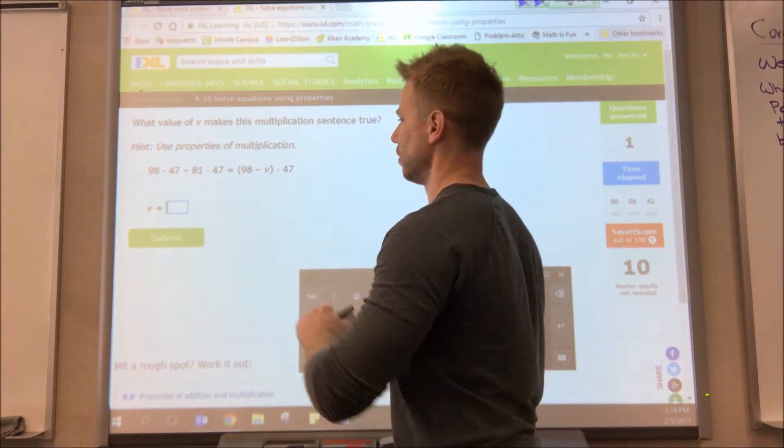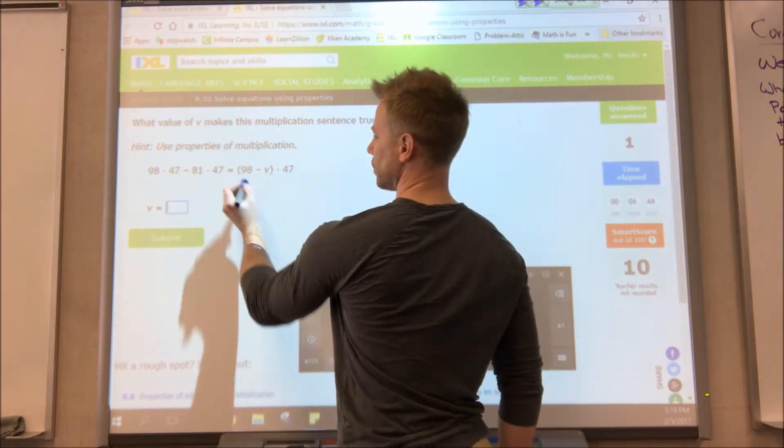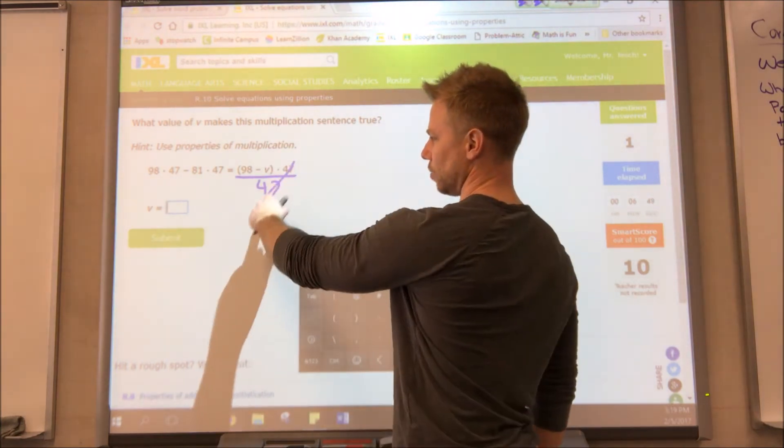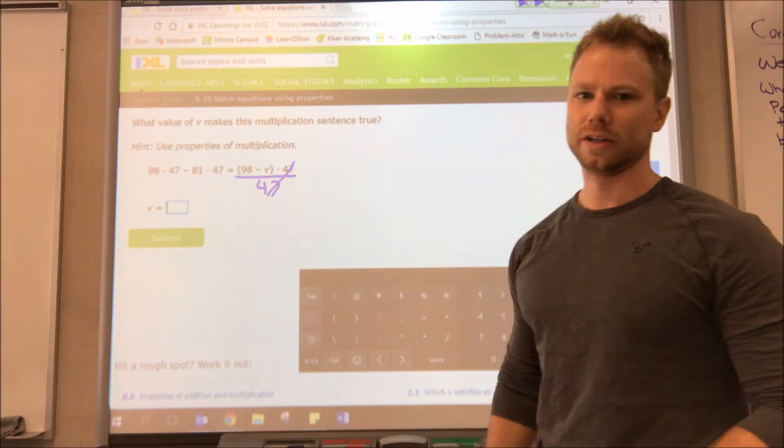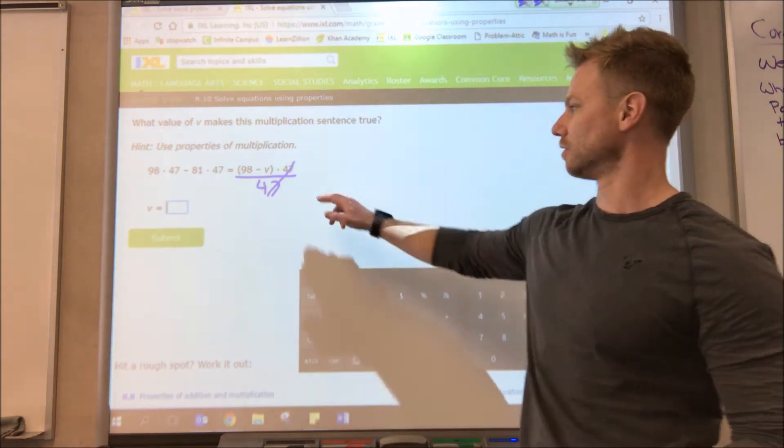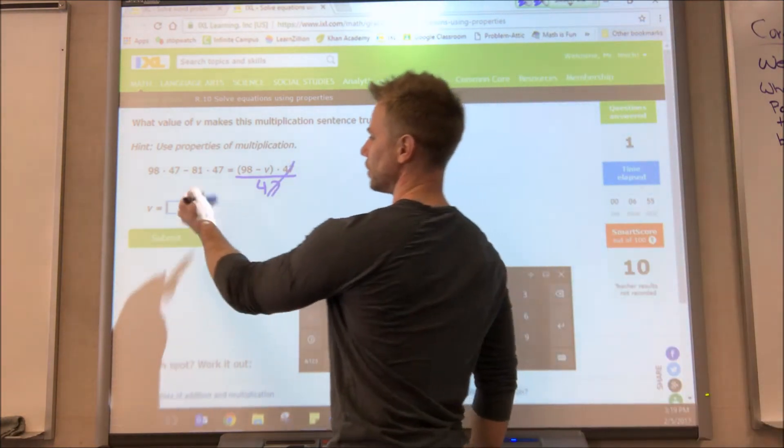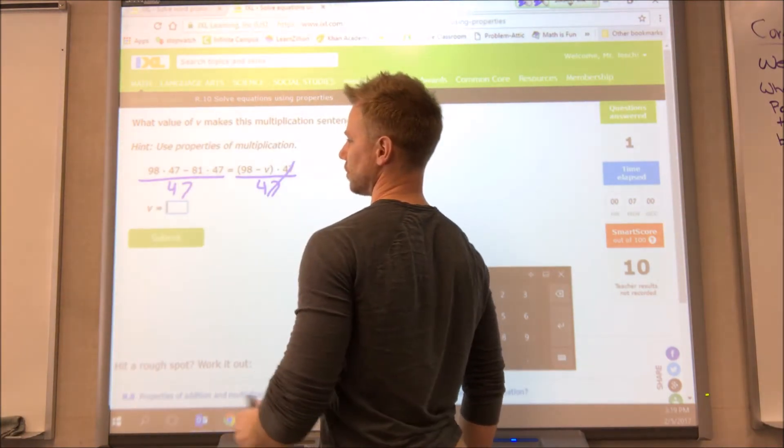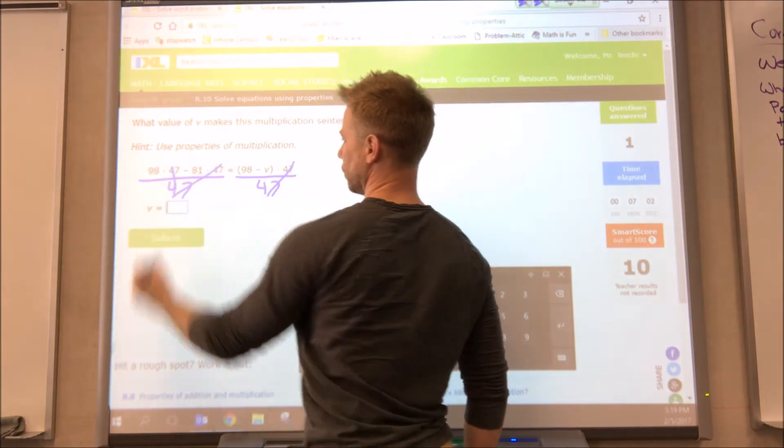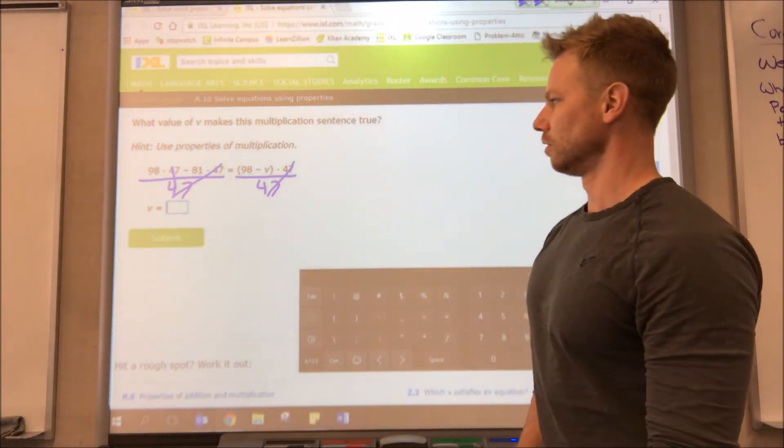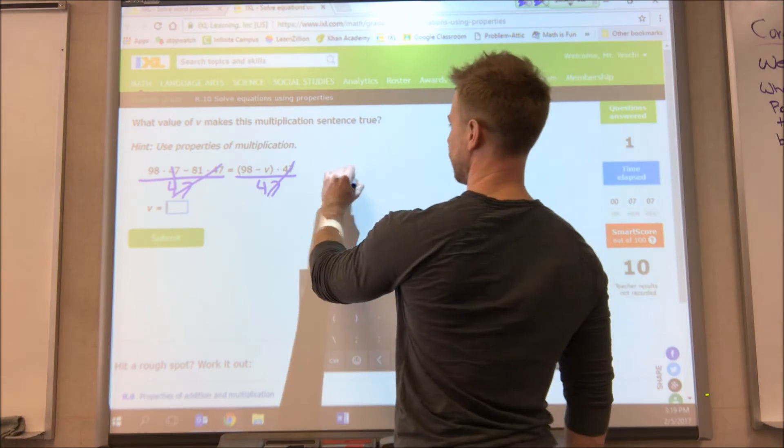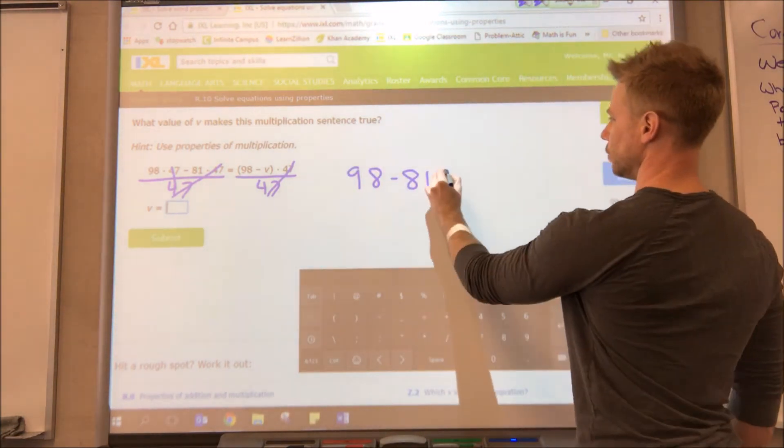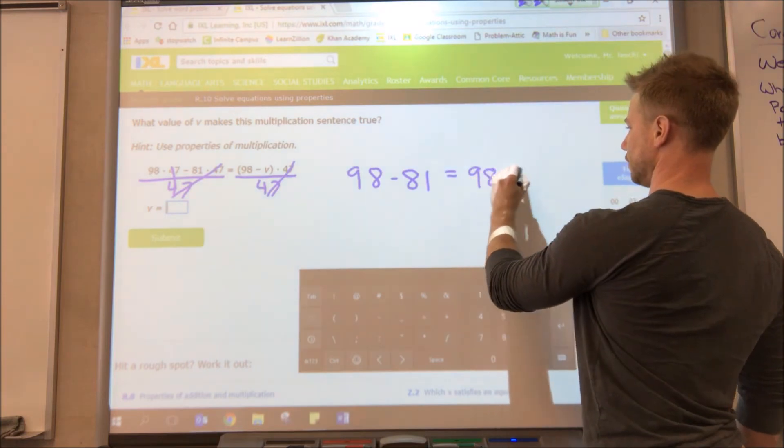So we want to get v by itself. We're multiplying by 47 on the outside, so the first thing I could do is divide by 47 and those 47's cancel. Opposite of multiplying is dividing. Divided by 47, what I do to one side I have to do to the other side. Now there's two 47's, so actually both of those will cancel with the 47 on the bottom. So now we have 98 minus 81 equals 98 minus v.